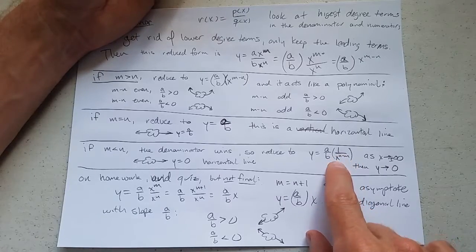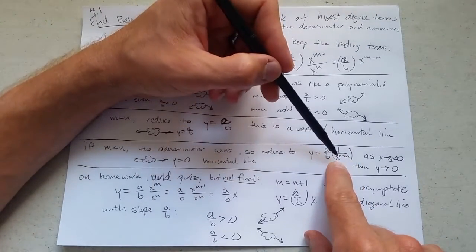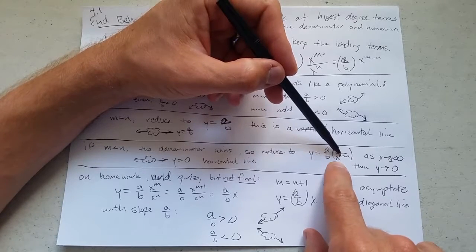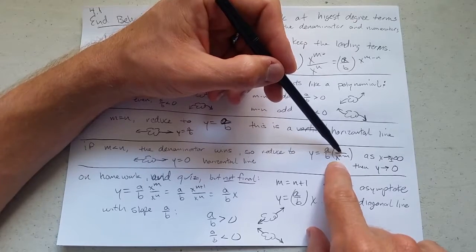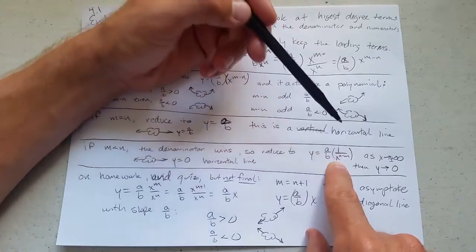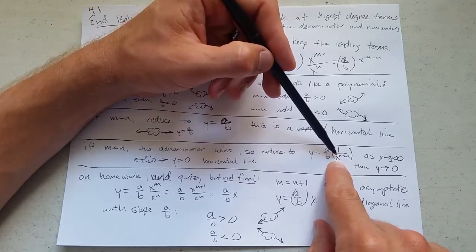What happens when x is really big? Think about putting in a number like a million. What is a million raised to a power? If it's squared, a million squared, something like a trillion, an even bigger number is the point.